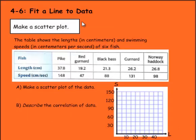Now we need to take data and actually make a scatter plot out of it. We need to make one of these the independent variable and one the dependent variable. Remember, independent is what we plug in and dependent is what we get out. This table shows the lengths in centimeters and swimming speeds in centimeters per second of six fish. We're trying to see if there's a relationship between the length of the fish and the speed of the fish. We have a pike which is 37.8 centimeters long and which has a speed of 148 centimeters per second. We could plot the dependent variable for speed up here.